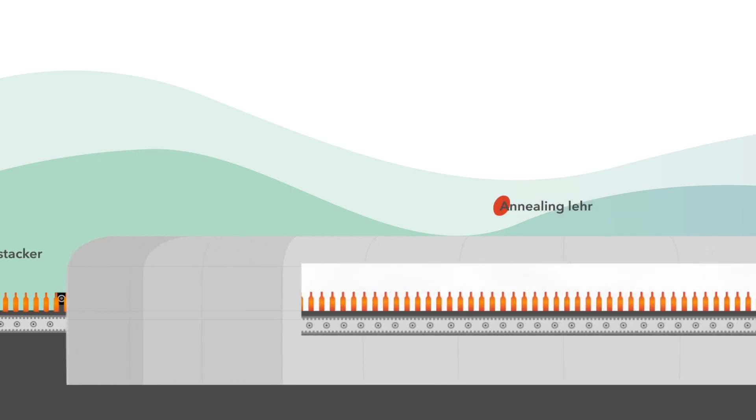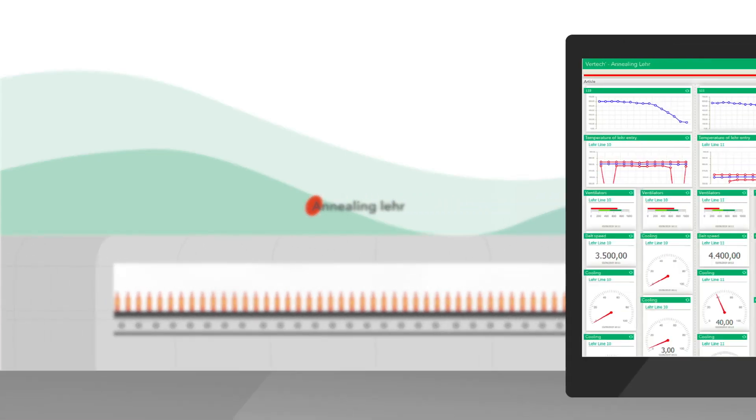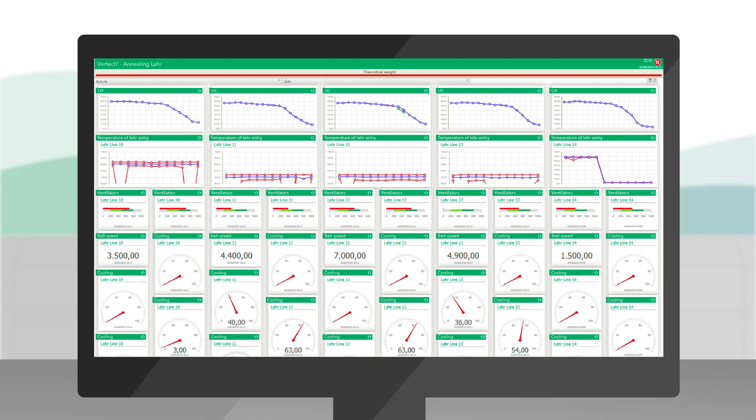Many KPIs can also be displayed at the layer, such as the instantaneous temperature, the temperature curve in the layer, and the speed of the belt.